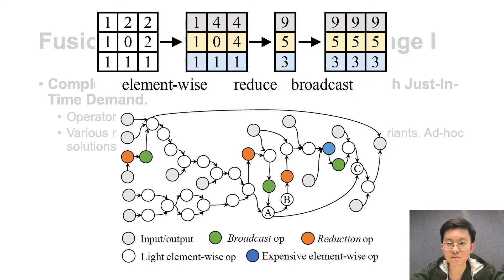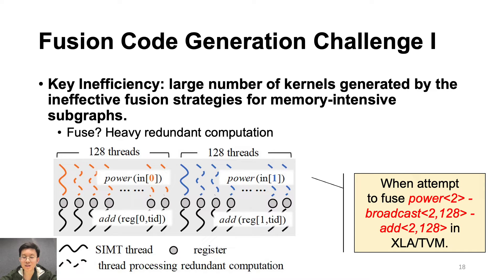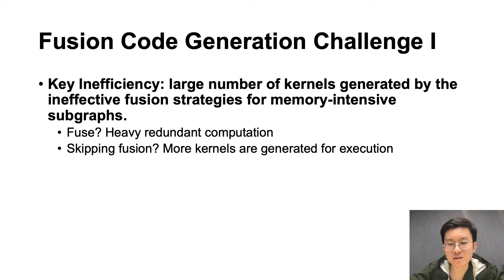Existing works cannot fuse such patterns into one kernel. The inefficiency of ineffective fusion results in a large number of kernels with severe framework scheduling, kernel launching overhead, and off-chip memory access. TVM and XLA want to fuse more, but per-element input inline code generation results in heavy redundant computation. For example, when fusing this case together, the power computation will be inlined to 2×128 threads as the input of an add op, causing redundant computation of the heavy power computations. When there are many waves of GPU threads, the redundant computations lead to severe overhead. But skipping fusion results in non-computation overhead. Existing compilers like XLA and TVM cannot deal with this dilemma.